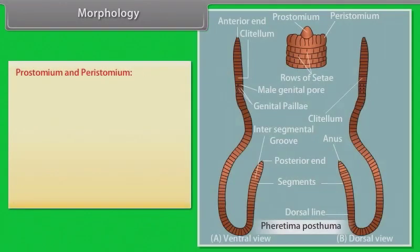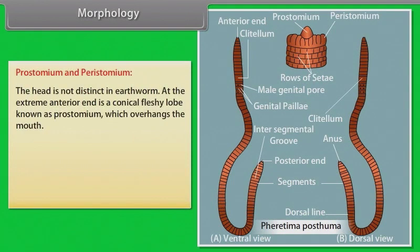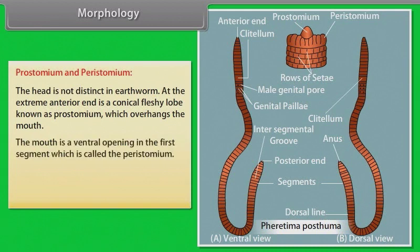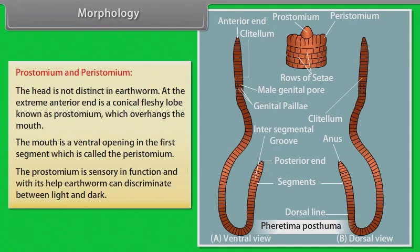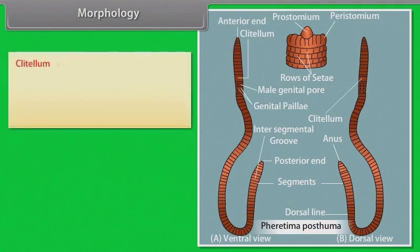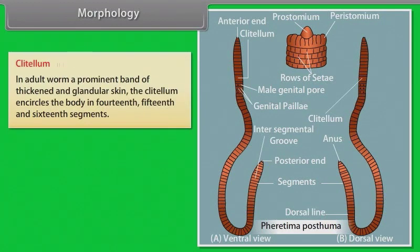The head is not distinct in earthworm. At the extreme anterior end is a conical fleshy lobe known as the prostomium, which overhangs the mouth. The mouth is a ventral opening in the first segment, called the peristomium. The prostomium is sensory in function; with its help earthworm can discriminate between light and dark. In an adult worm, a prominent band of thickened glandular skin called the clitellum encircles the body in the 14th, 15th and 16th segments.